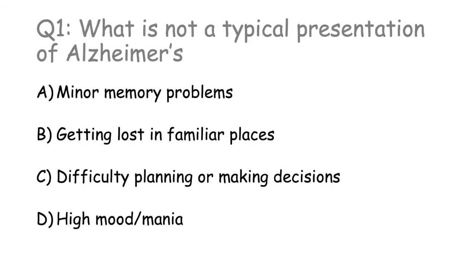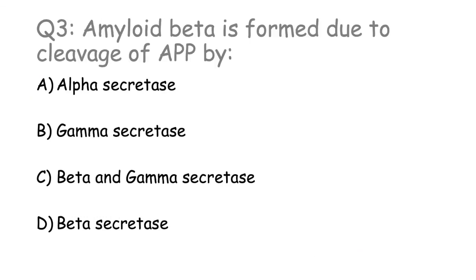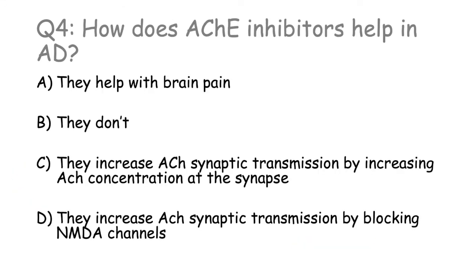We've got some questions to make sure you've understood — feel free to pause the video. Question one: What is not a typical presentation of Alzheimer's disease? Question two: Amyloid beta is formed due to cleavage of amyloid precursor protein by what enzymes? Question three: How do acetylcholinesterase inhibitors help in Alzheimer's disease?